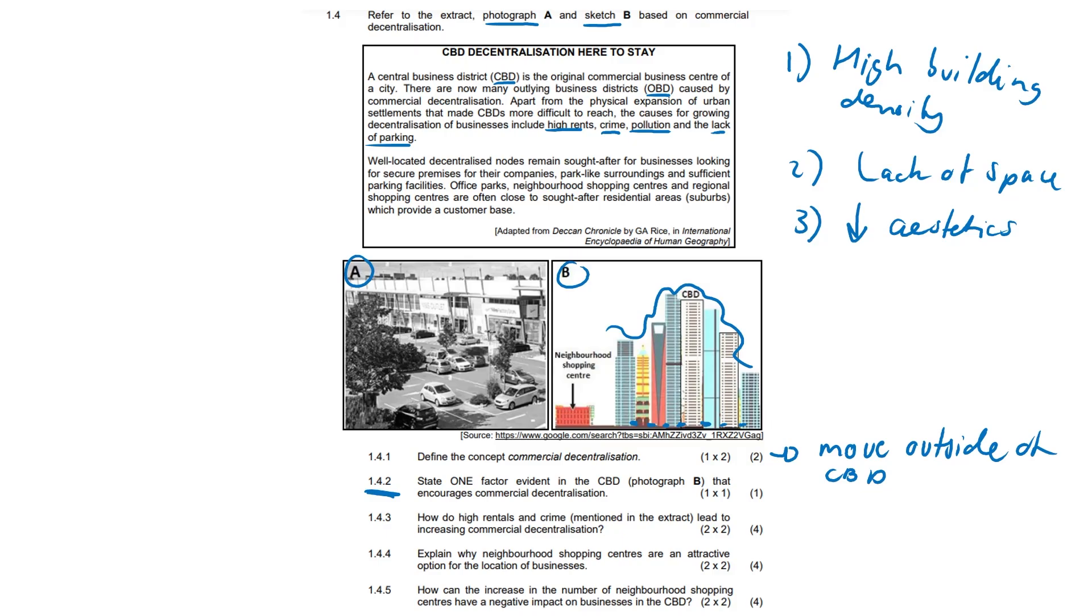1.4.3 How do high rentals and crime mentioned in the extract lead to increasing commercial decentralization? In 1.4.3, you would have needed to structure your answer a bit better. Firstly, let's start with high rent. And let's put a bit of meat on our answer. People cannot afford high rentals. It's expensive. And this would decrease the profits of the business or decrease profits.